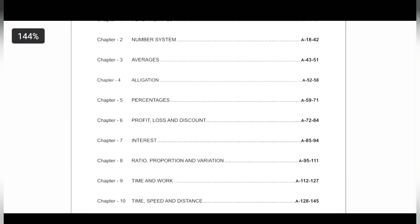Time, speed, distance is two questions but the level is very, very high. Time and work is one question. Ratio is two questions — you might think ratios were covered in coaching classes three months ago, and ratios is one topic you can easily do because it is easy and important. Average and allegation are one question each. Number system is two questions but that's too huge. Percentage and profit and loss are two questions each. Now I need to identify a few topics from here.